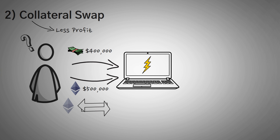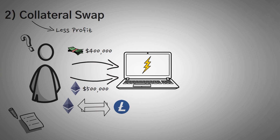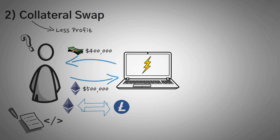So maybe you're less bullish on Ethereum and you want to swap your collateral to an Ethereum version of Litecoin instead. You could simply write a flash loan that borrowed money to pay back your loan, swap out your Ethereum for Litecoin, and then deposit it back — essentially changing out your collateral without touching the true $400,000 that you borrowed.